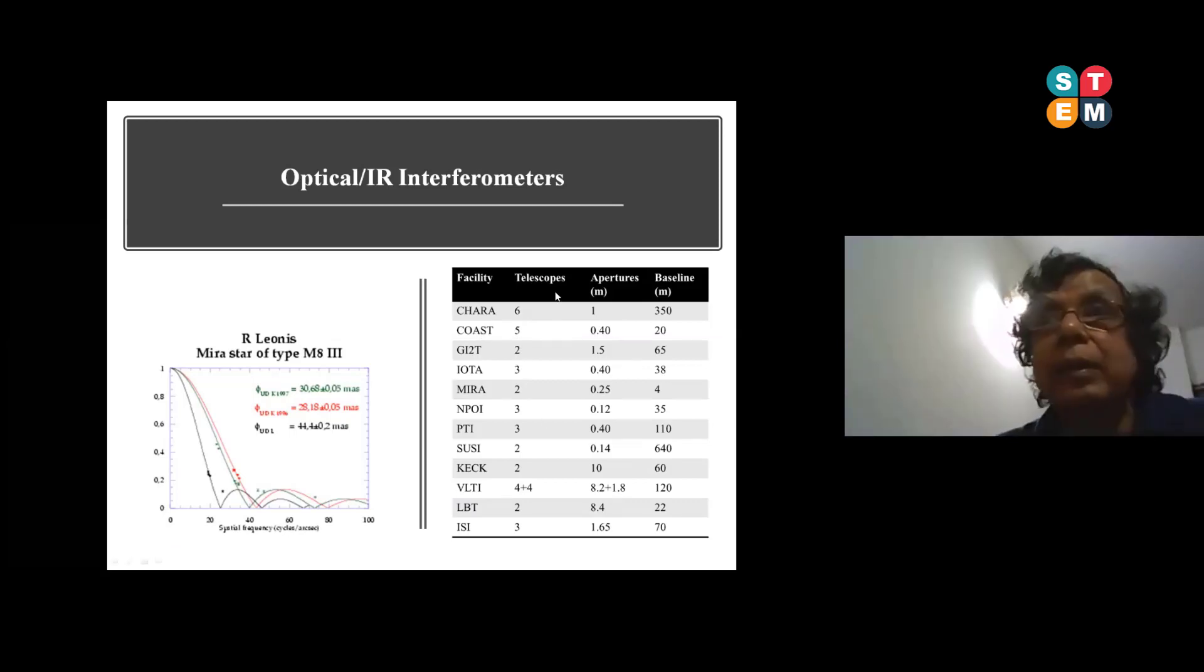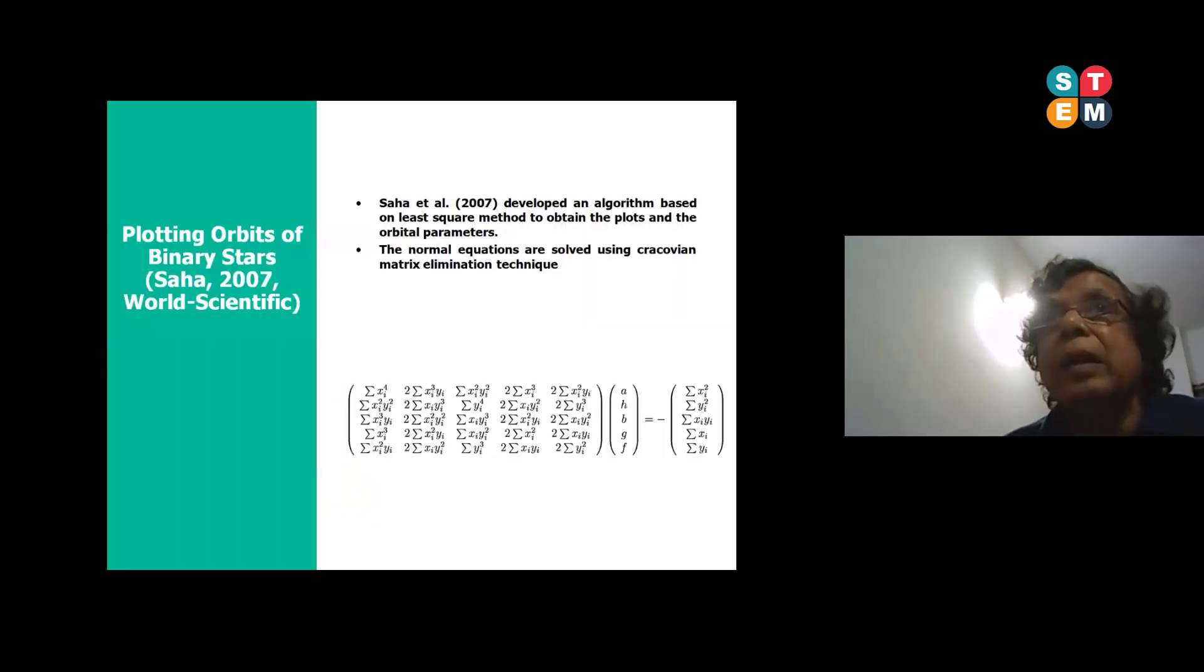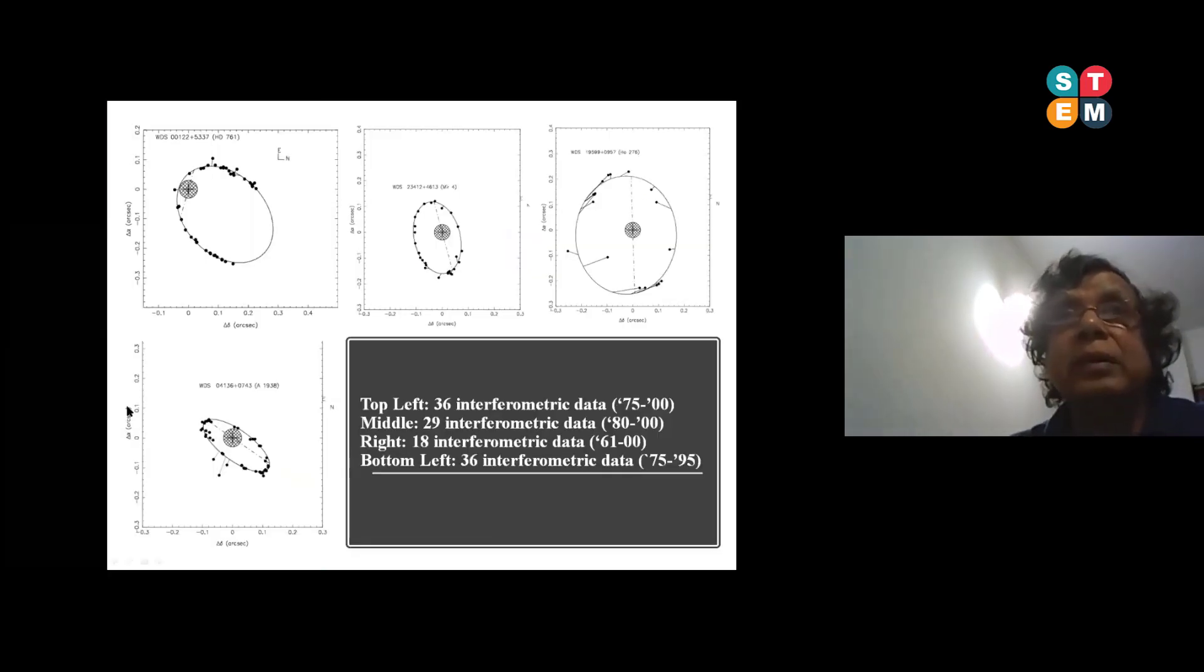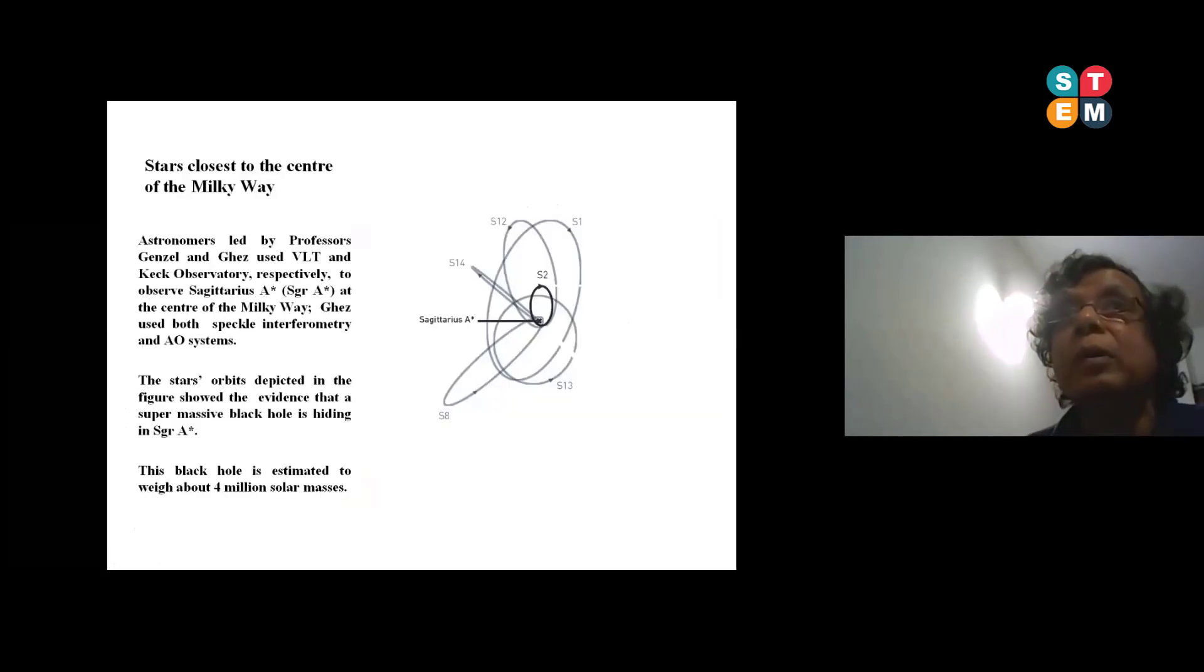After that about a dozen interferometers came, out of which about two or three are still working. This is the kind of algorithm we developed to calculate the orbits and interferometer data. If you take you can get a very nice fitting data. These are the things we have developed and all those things are available in my book.